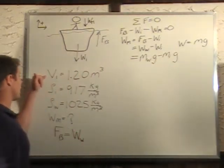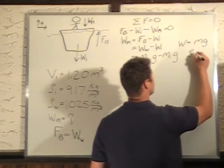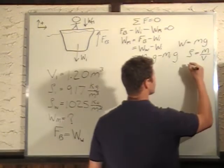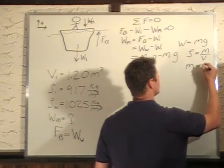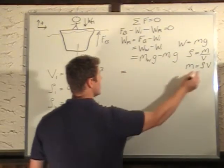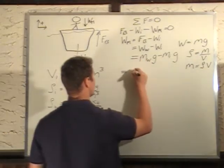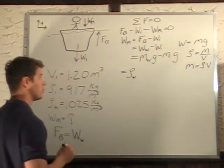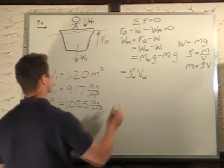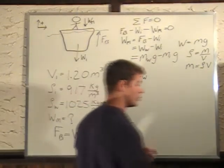Now we're given the volume of the ice and the densities. So we know that rho, our density, equals mass divided by volume. We're looking for mass, so we solve for mass. Mass is equal to rho times volume. So we're going to plug this rho times V in for our mass.